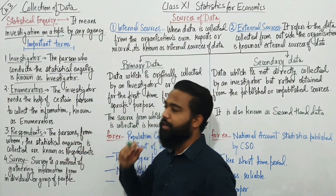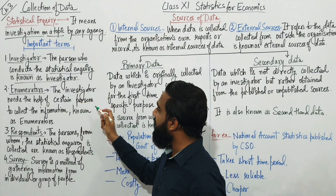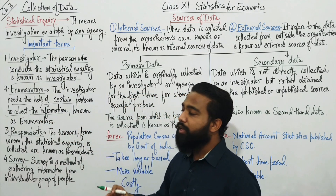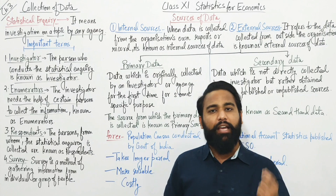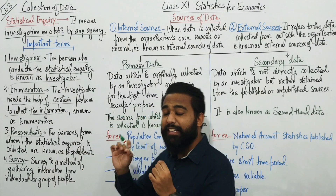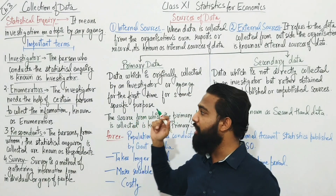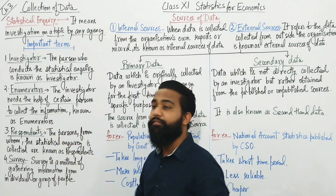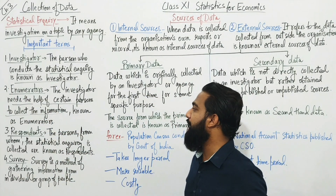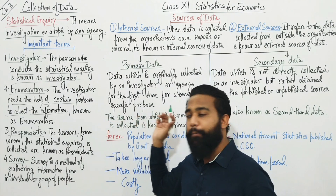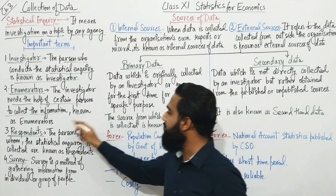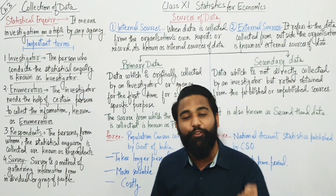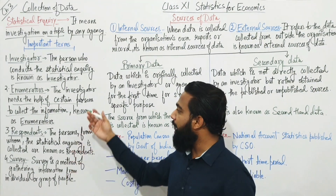The second term is enumerator. The investigator needs the help of certain persons to collect the information, because the whole statistical inquiry cannot be done by one person alone. So those persons who are appointed to help the investigator in collecting the information are known as enumerators.